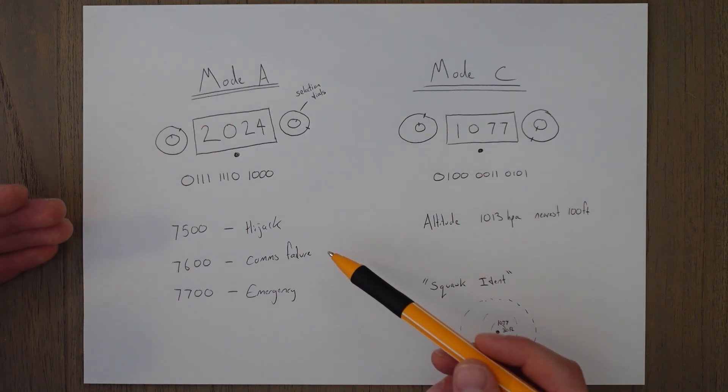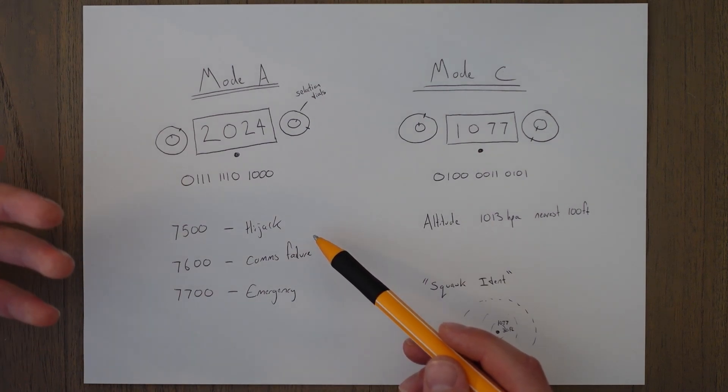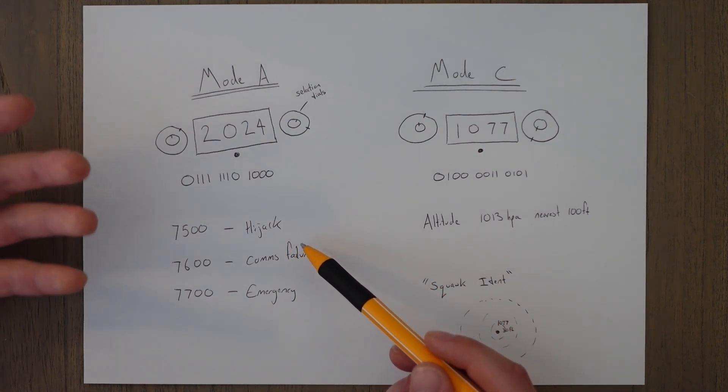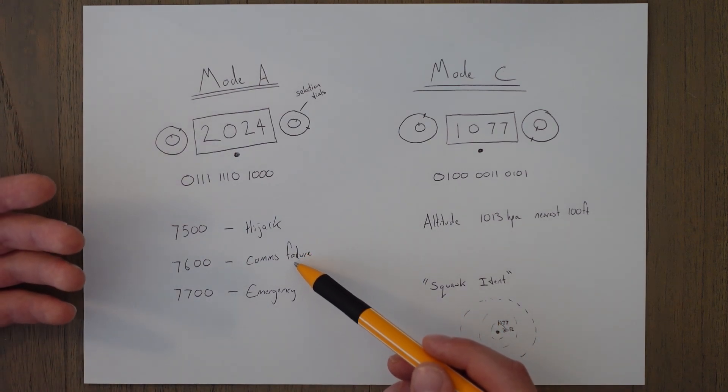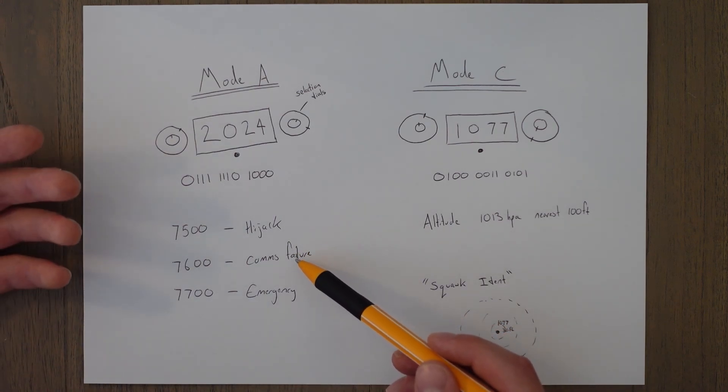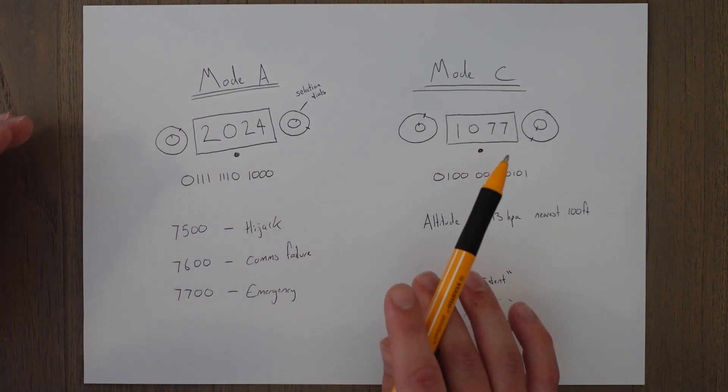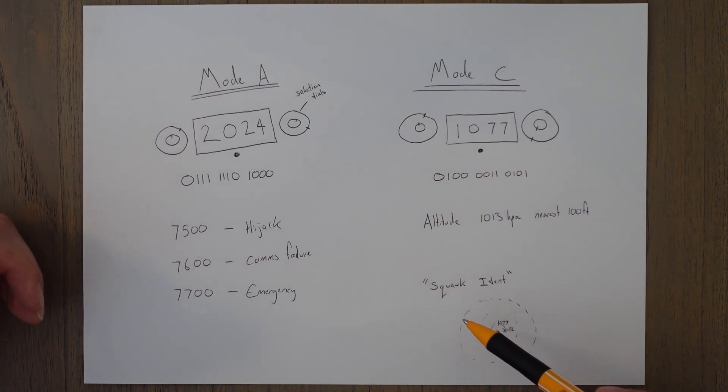So when an air traffic controller sees these codes appear on their screen, it will alert them and give them more information. If you have 76 set and you aren't responding to any radio calls, then they know what's up. If you have 77 set and you are rapidly descending, you might have a problem meaning you can't stay up at an altitude, and they'll clear the aircraft from below you so that you can pass down through the flight levels without risk of flying into any other aircraft.